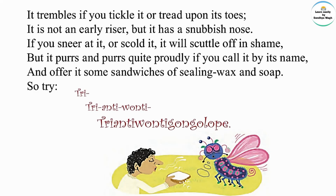Here in this third stanza, the poet tells us something more about the insect. Tremble means to shake; tickle means to touch somebody lightly with your fingers. It is not an early riser.